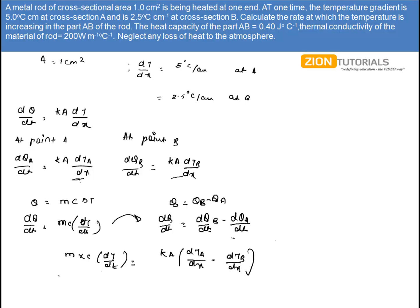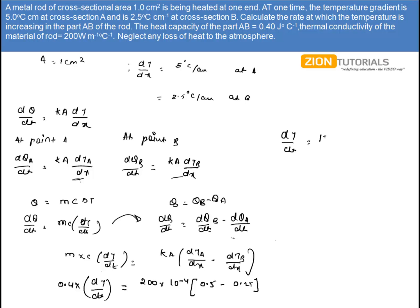Substituting the values: MC = 0.4, so 0.4·(dT/dt) equals K = 200, area = 1 cm² = 10⁻⁴ m², dT_A/dx = 5°C/cm = 0.5°C/m, and dT_B/dx = 2.5°C/cm = 0.25°C/m. Solving this equation gives dT/dt = 12.5°C per second, or equivalently 1.25°C per second after unit correction.